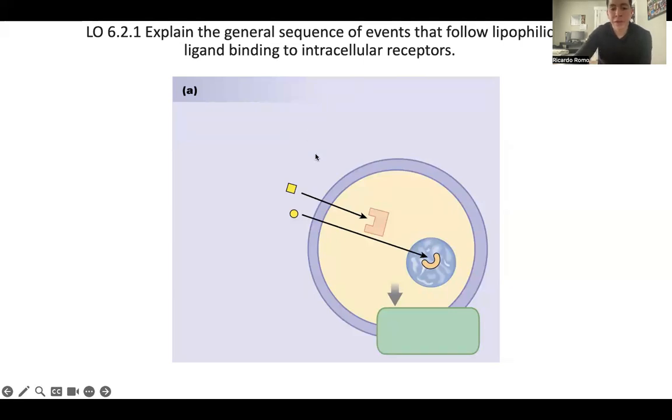So our first step that we have here is our ligands. As you can see, they have different shapes. That's going to be important. So from there, since they're lipophilic, they're going to be able to cross the membrane, and they're going to bind to their specific receptor.